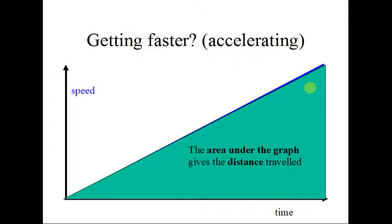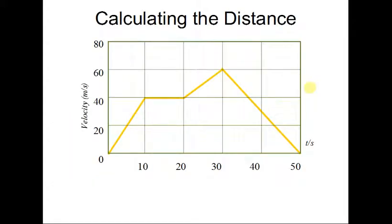On a VT graph, the area under the graph gives you the distance traveled. And you can see in this particular shape, it's a lovely triangle. It's a right-angled triangle. The formula for area of a right-angled triangle is half times the base times the height. The base is obviously your time. The height here is your speed or velocity. So here, let's look at the first 10 seconds of this journey. In the first 10 seconds, the base was 10, the height was 40. So if I want to know the distance traveled in the first 10 seconds, I've got to do half times the base times the height. 40 times 10 is 400 times half is 200. So the object traveled 200 meters in the first 10 seconds.